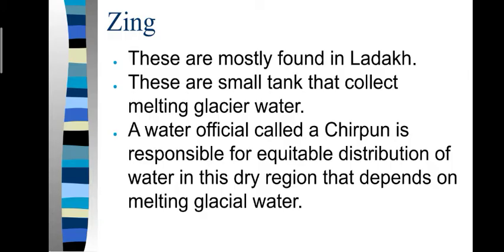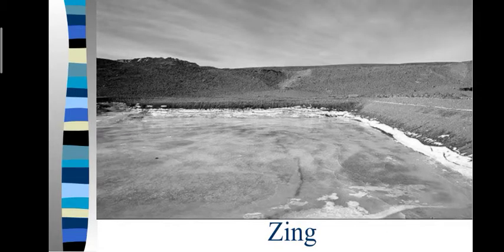Zings are mostly found in Ladakh. These are small tanks that collect melting glacier water. A water official called Chirpon is responsible for the equitable distribution of water in this dry region that depends on melting glacial water. This system is practiced in mountainous areas where water is present only in the form of ice or glacial waters.